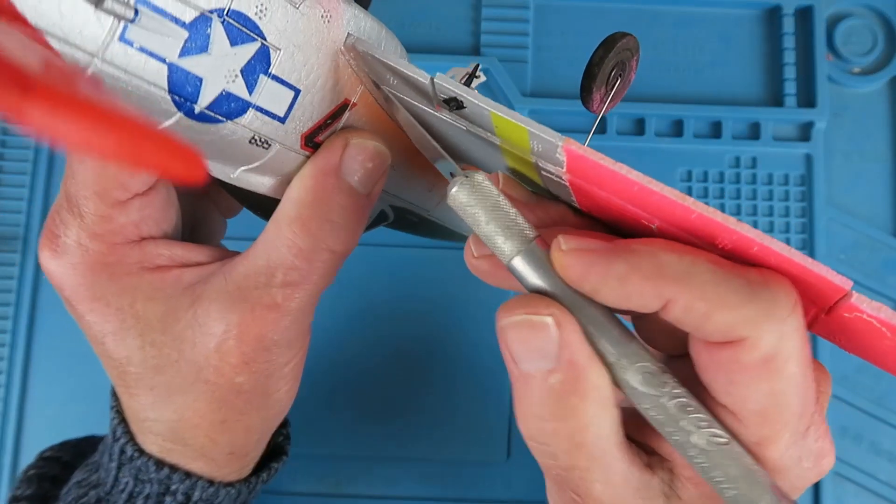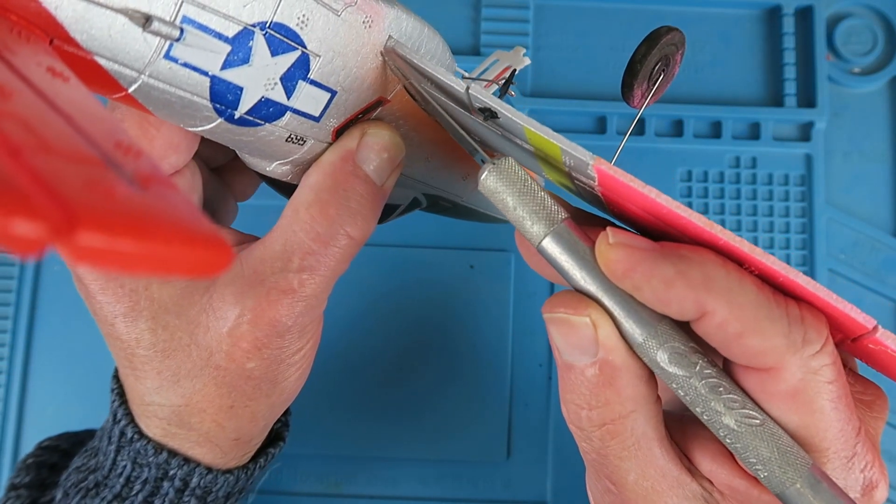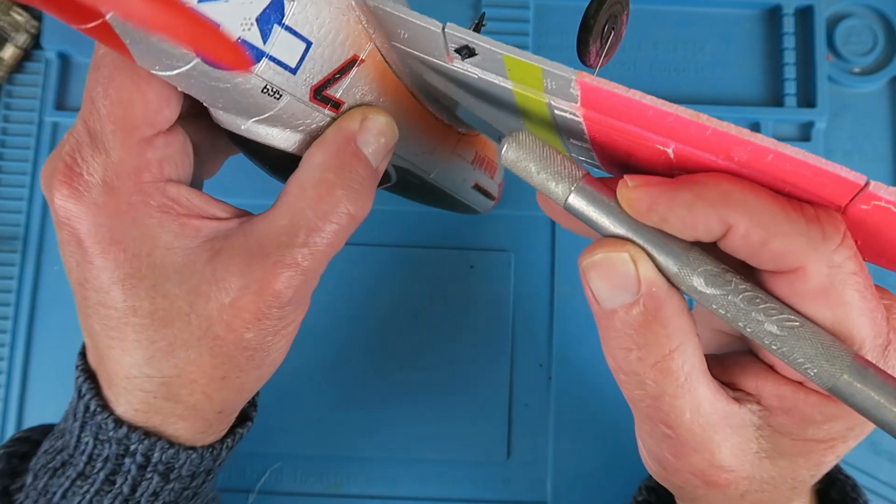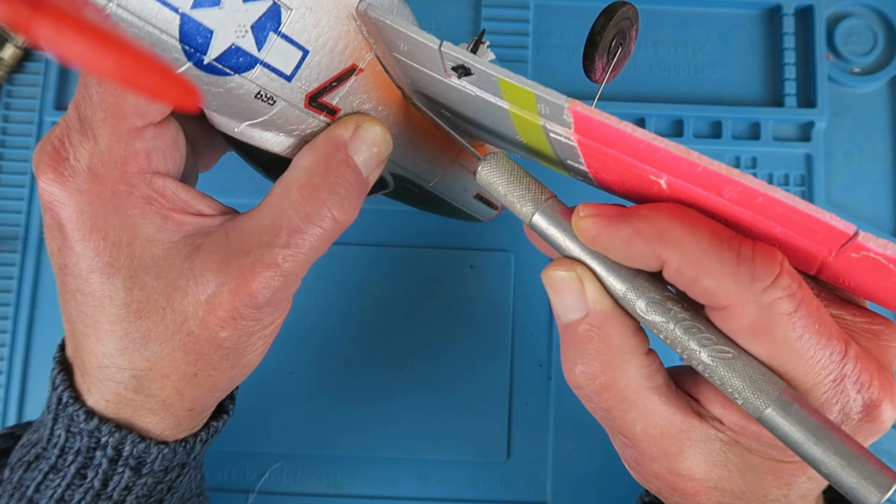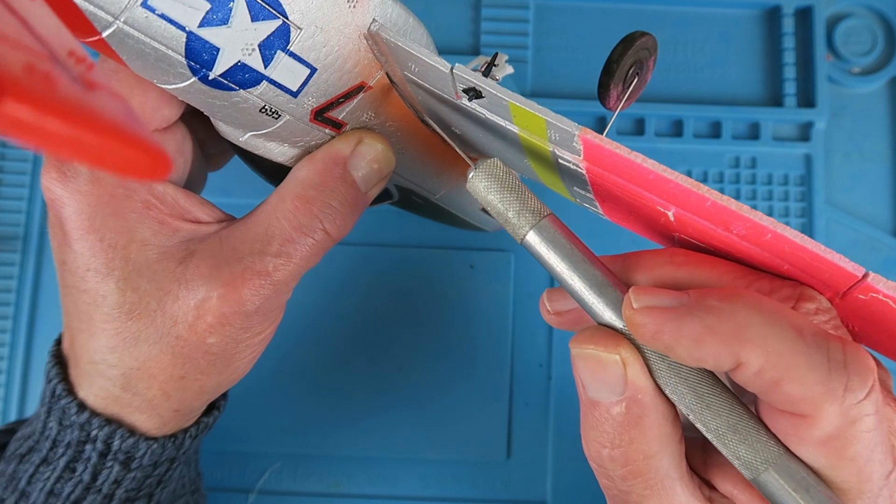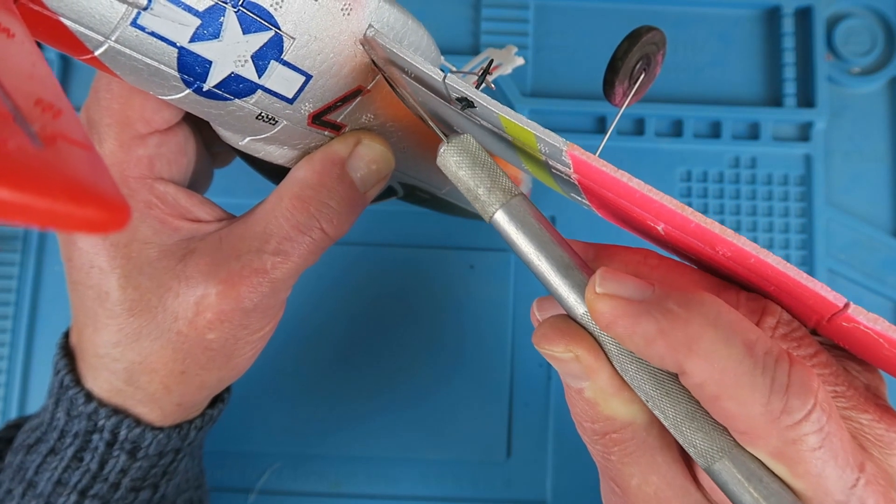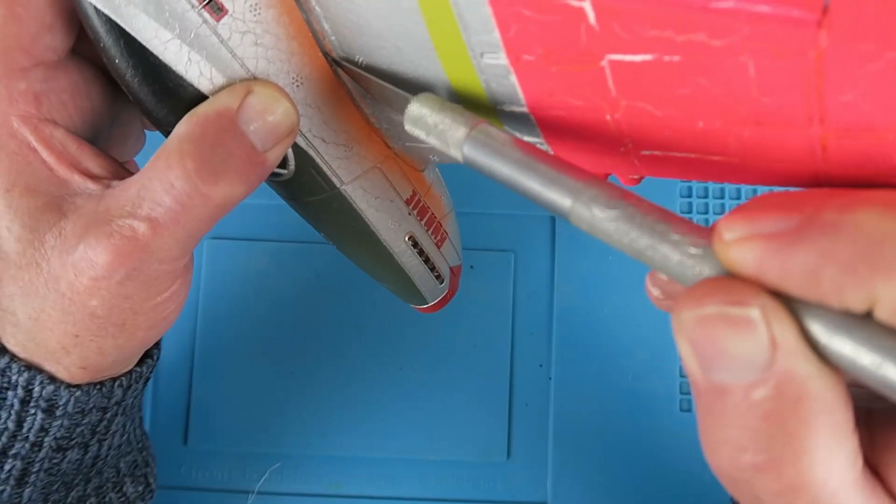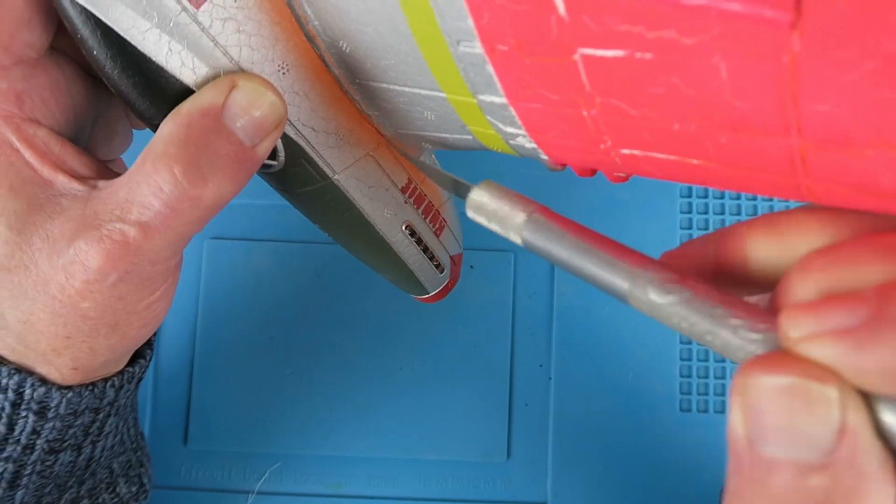Let's try now getting in between the wing and the fuselage. Actually, I can see as I'm pressing it, there's some gaps that are opening. I'm just going to use that to my advantage.